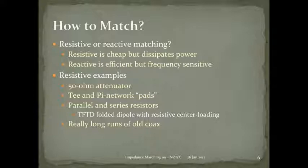A common example of resistive matching: put a 50-ohm attenuator between a signal generator and the circuit you're testing to isolate the generator from impedance variations. No matter what you do on the other side, the generator still sees the impedance it wants and remains calibrated. Attenuator pads for audio systems work the same way — T, pi, balanced, unbalanced. Parallel and series resistors can swamp out impedance variations.